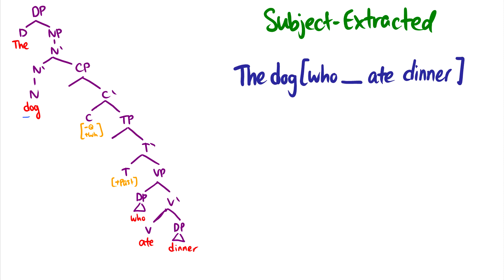So here's what we have. The dog who ate dinner. I'm putting who as the specifier of VP because the dog is the thing eating dinner. So who ate dinner. And of course this gets the theta role from ate. So this is the agent of the eating.